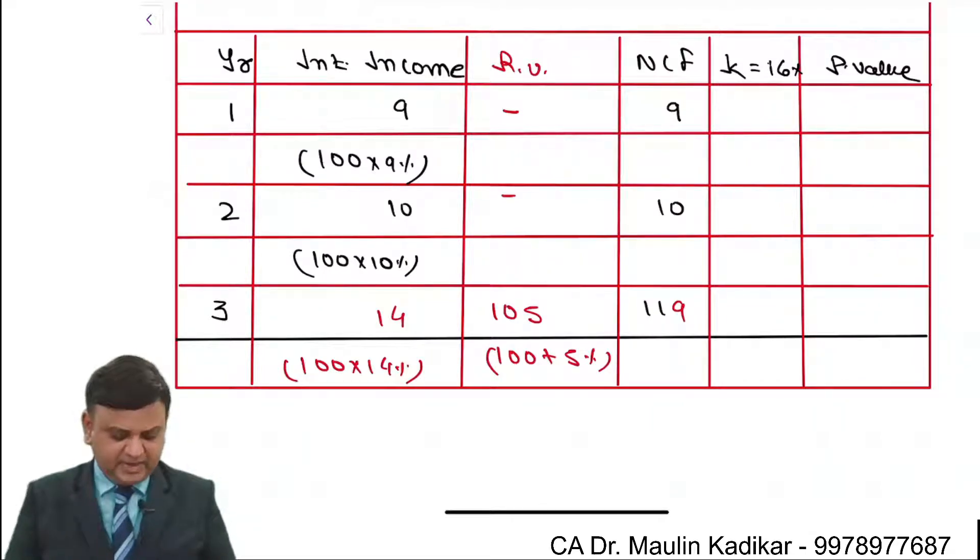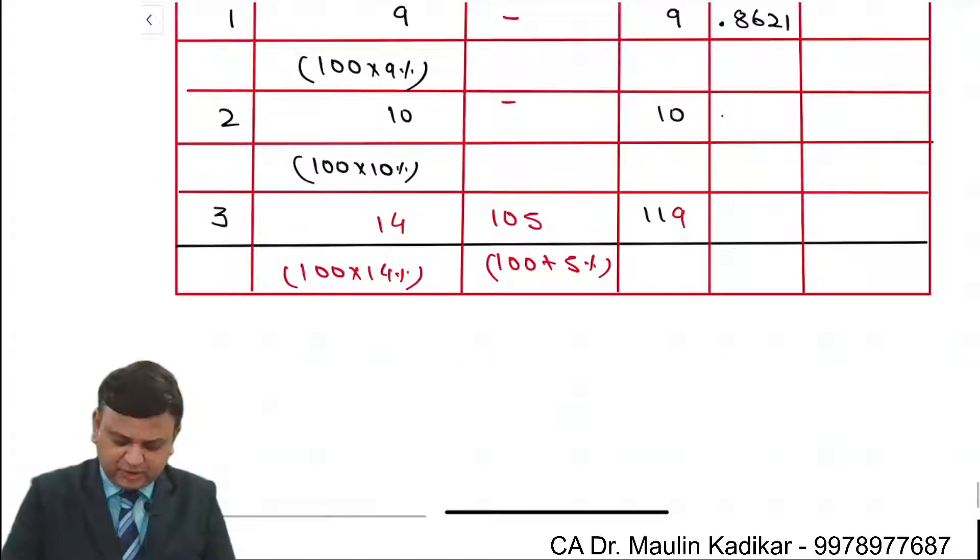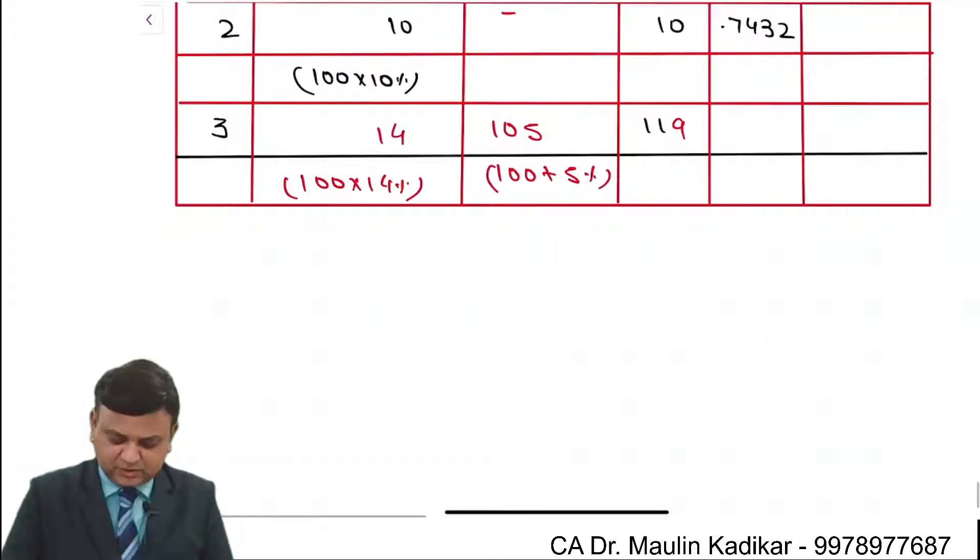And accordingly we make the calculation of the price 1 divided by 1.16. First year factor is 0.8621. Second year factor is 0.7432. Third year factor is 0.6407.